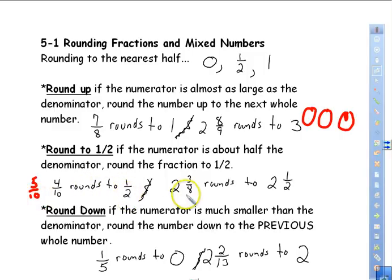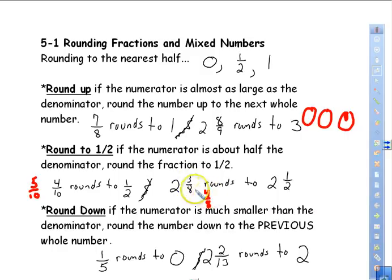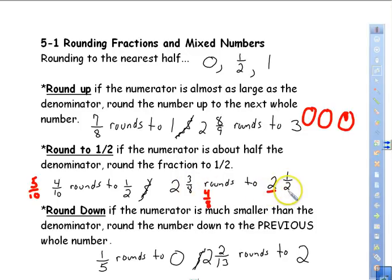For the mixed number two and 3/8: half of eight is four, so 4/8 equals exactly one half. Three is very close to four, so it's close to exactly one half. The two stays the same and the fraction rounds to one half, giving two and one half.